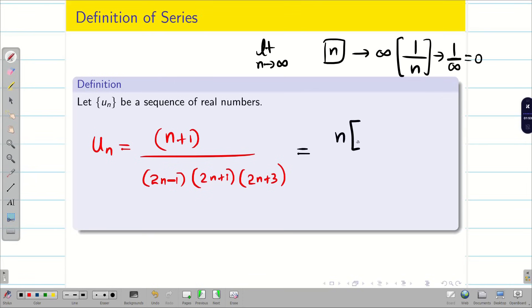So, now I will take n outside from this problem. We will be getting n times 1 plus 1 by n. Now, here if I take n outside, 2 minus 1 by n, n times 2 plus 1 by n, then n times 2 plus 3 by n. And we try to cancel some n.